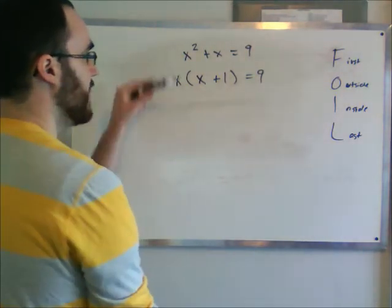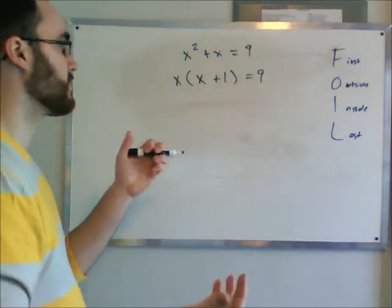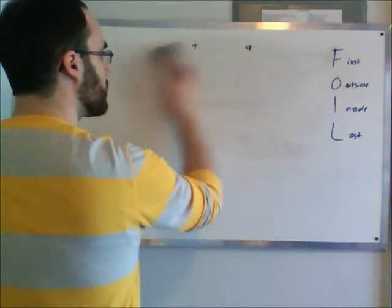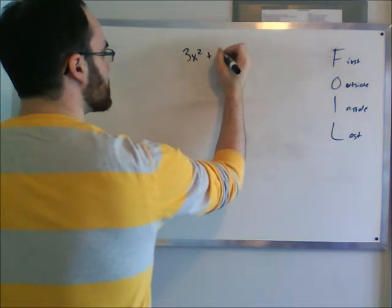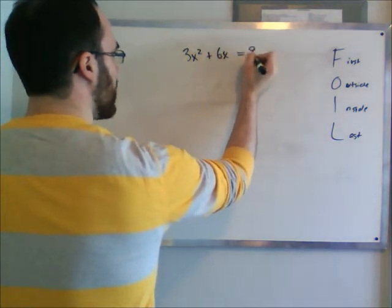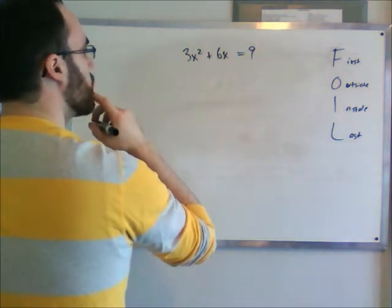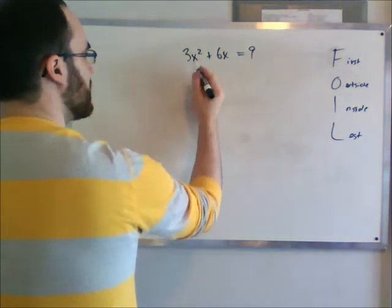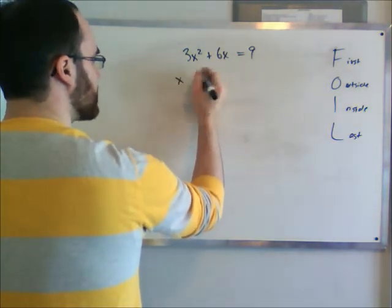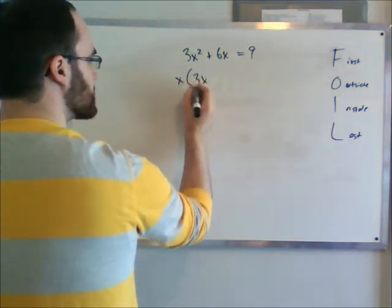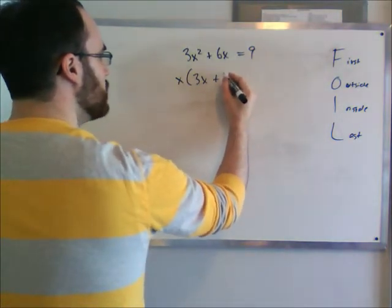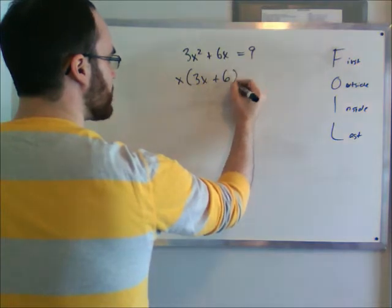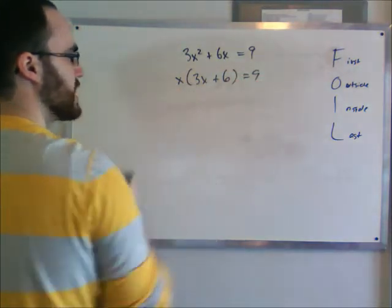That's the first way to factor out a common factor. Let's try one more, a little more complicated, and say we have 3x squared plus 6x equals 9. So what do we do here? We can take x out of the equation, so we have x out of here onto 3x, because x times 3x is 3x squared, plus we can have 6 here, because 6 times x is 6x.